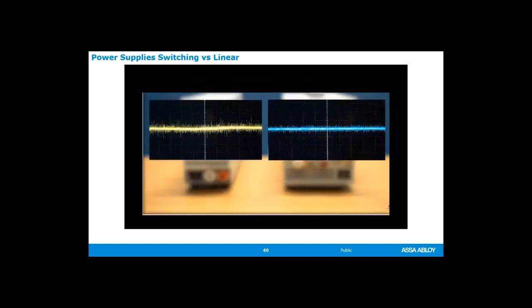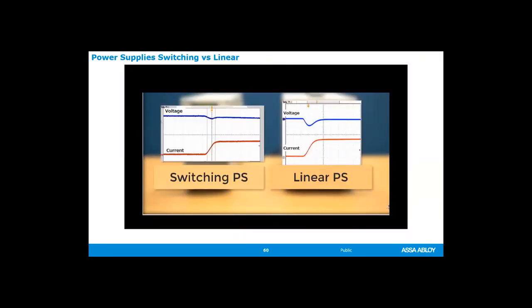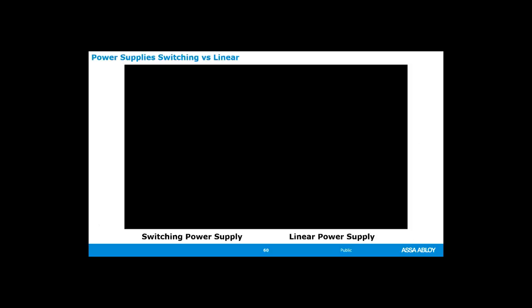In addition to increased reliability, a linear power supply is virtually immune to noise and electromagnetic interference, making it perfect for sensitive devices like medical equipment and low-noise amplifiers. Linear power supplies also have vastly superior transient response, meaning much less time is required for the output voltage to recover from changes in the load. The switching power supply is going to be smaller and usually less expensive than the linear power supply.